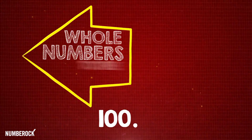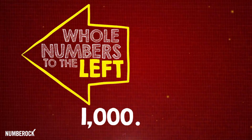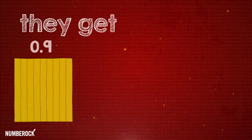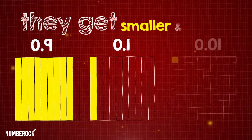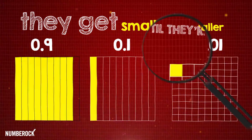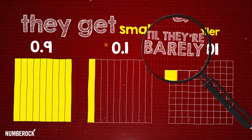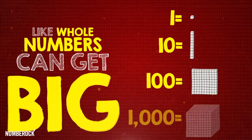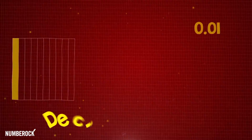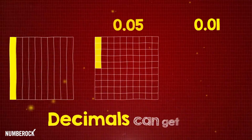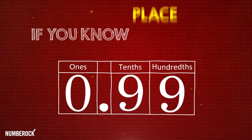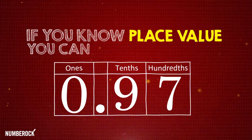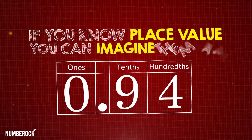Decimals are fractions just with different names; they each have a value that's exactly the same. Whole numbers to the left, decimals to the right — they get smaller and smaller till they're barely inside. Like whole numbers can get big, decimals can get small; if you know place value, you can imagine them all.